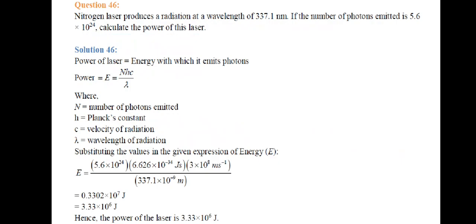Next question: a nitrogen laser produces radiation at a wavelength of 337.1 nanometers. If the number of photons emitted is 5.6 × 10²⁴, calculate the power of this laser. Energy E = nhc/λ. Substituting: E = 5.6×10²⁴ × 6.626×10⁻³⁴ J·s × 3.0×10⁸ m/s ÷ 337.1×10⁻⁹ m. On solving, we get 3.33 × 10⁶ Joules.